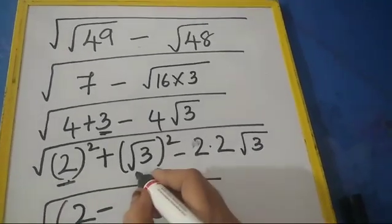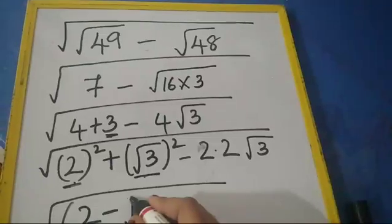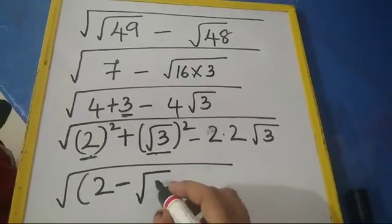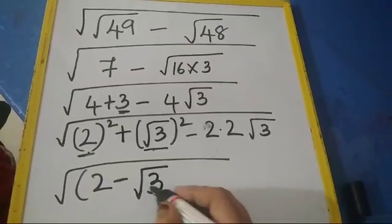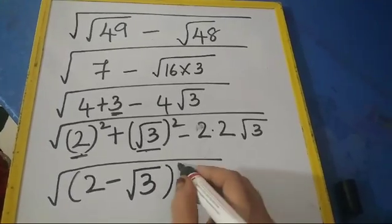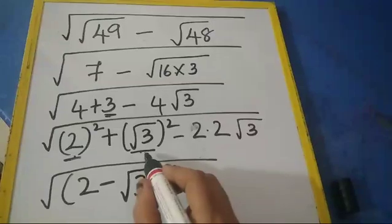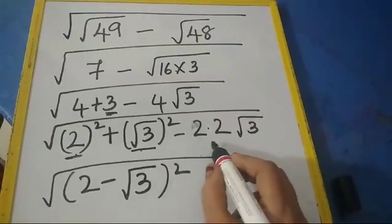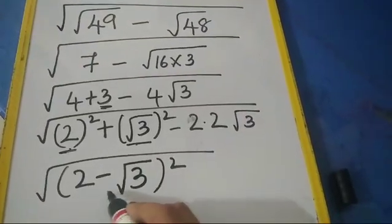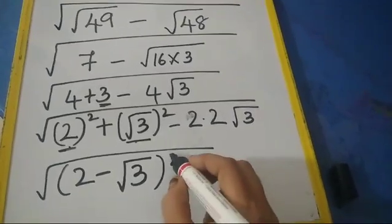is 2, minus what is b? b is nothing but √3, into whole square. a minus b whole square: a² + b² - 2ab is nothing but (a-b)². The